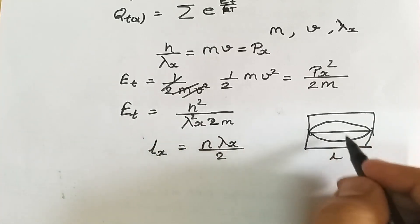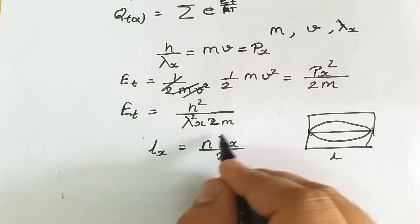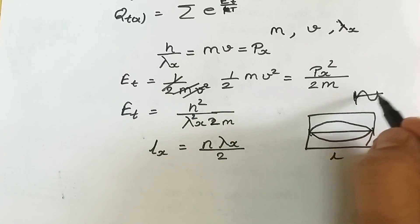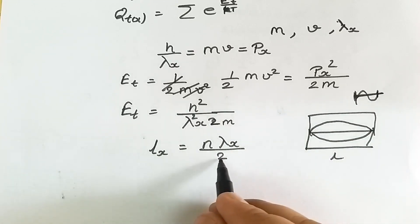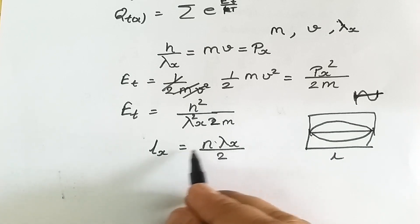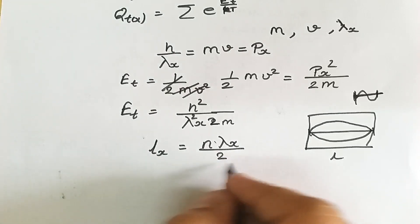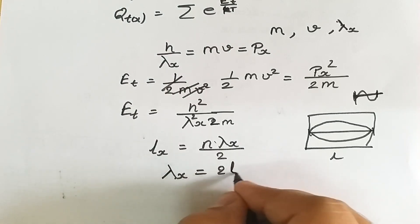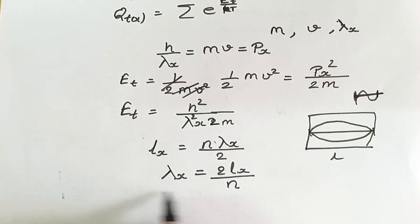Lambda_x is our wavelength, and the wavelength is the sum of an individual crest and trough. Here only a single crest or single trough is formed, so it is divided by 2. With n number of particles, the total length is L_x equals n lambda_x divided by 2. Rearranging, lambda_x equals 2L_x upon n, where n represents the quantum number.